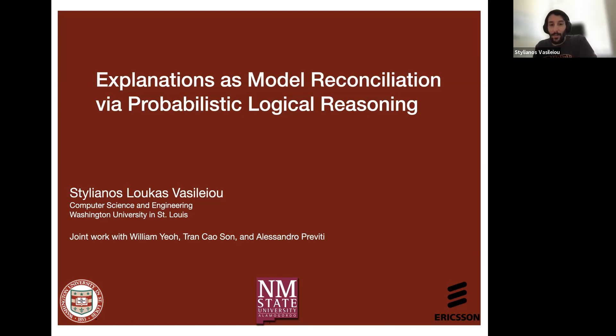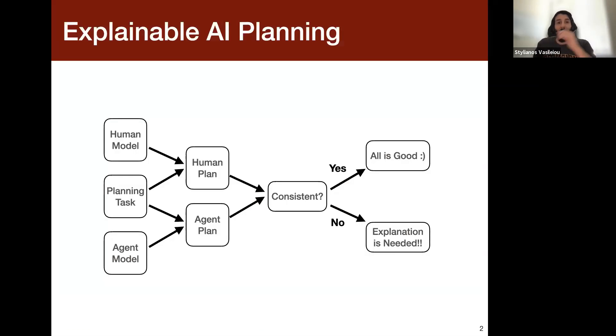So this is a joint work with William Jotran Carlson and Alessandro Previdi, and for the sake of time, I'll try to keep it very high level. So I'm going to start with some introductory material. Model reconciliation originally originated from explainable AI planning. So typically in explainable AI planning, we have of course a planning task, but also we have an agent and a human user, each of which have their own models of the planning task.